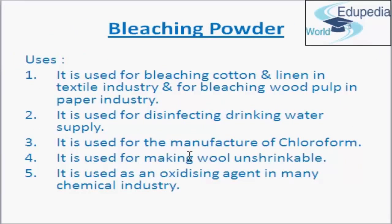Uses of bleaching powder: it is used for bleaching cotton and linen in the textile industry, and for bleaching wood pulp in the paper industry. It is also used for bleaching washed clothes in laundry. The second use is it is used for disinfecting drinking water supply, making it free from germs. The third use is it is used for the manufacture of chloroform. Another use is it is used for making wool unshrinkable. Finally, bleaching powder is used as an oxidizing agent in many chemical industries.